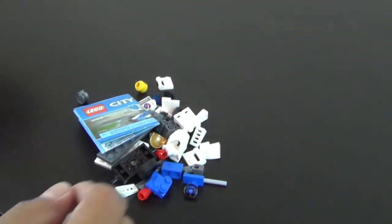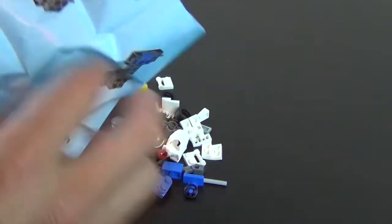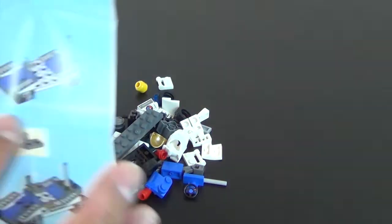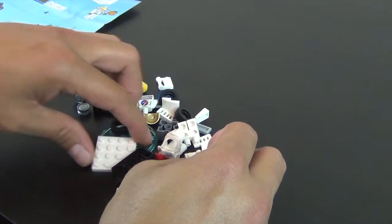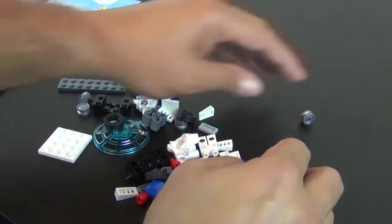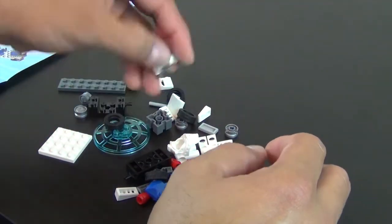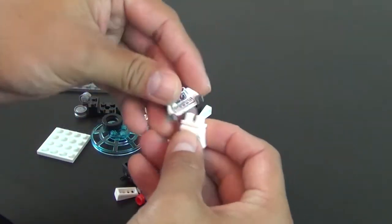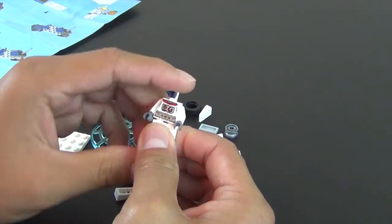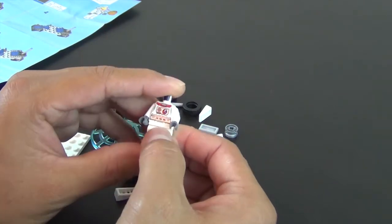There's an instruction book that was more or less an instruction sheet that was just folded over into the set. You can see a minimal amount of pieces. We'll go ahead and get the minifigure built, and I'm really excited about the whole space sub-theme.